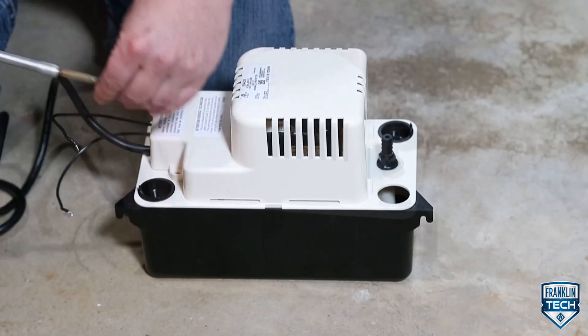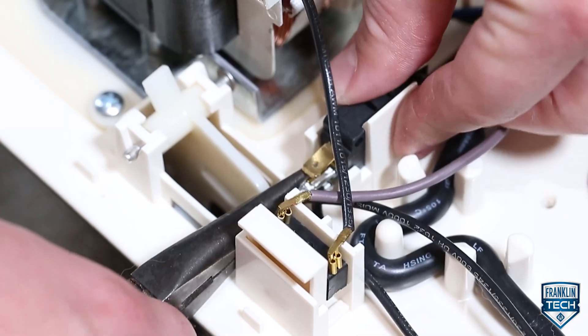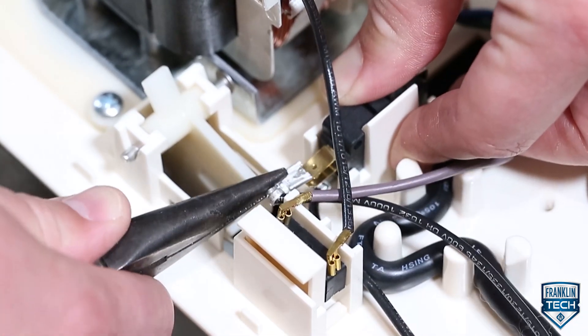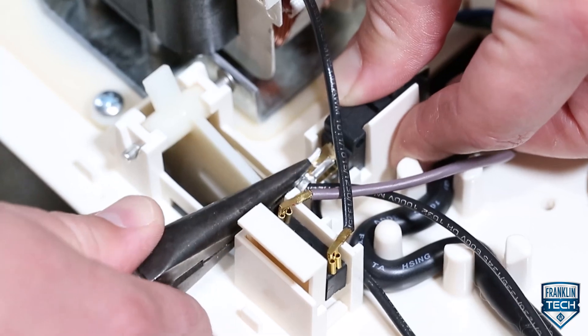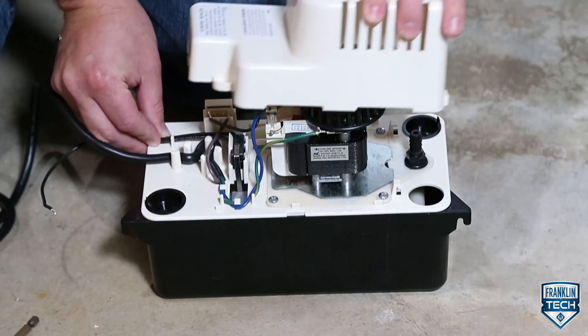Remove the pump's motor cover. Support the switch and carefully change the lead wire from the NO terminal to the NC terminal. Now, reinstall the motor cover.